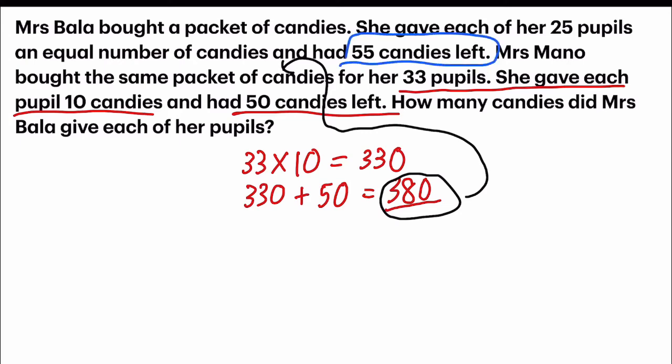First, I need to remove those 55 candies. By subtracting 55 from 380, I get 325.